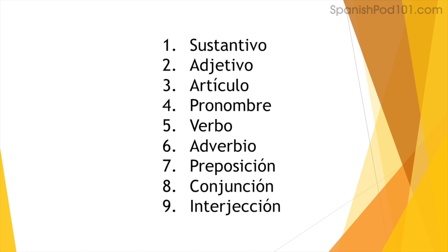I think this is a good start — it might not be the most accurate, but it's a good introduction. So we have nine kinds of words in Spanish: sustantivos (nouns), adjetivo (adjectives), artículo (article), pronombre (pronouns), verbo (verbs), adverbio (adverbs), preposición (preposition), conjunción — conjunctions, like connecting words or nexus — and interjección (interjections). All words in Spanish are classified within these nine categories.